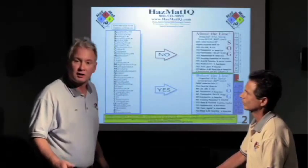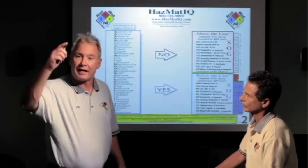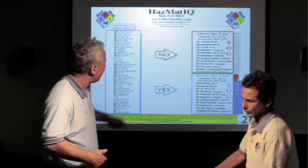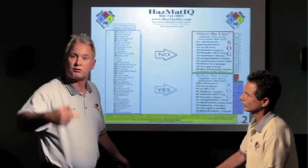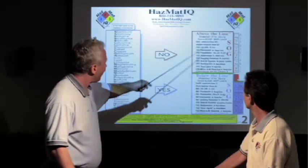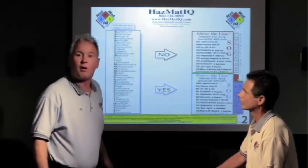Based on that information I will wear turnout gear and SCBA if I'm a firefighter. I will wear level B if I'm a police officer or I work for the EPA, and if I'm military personnel I'll wear mop gear.